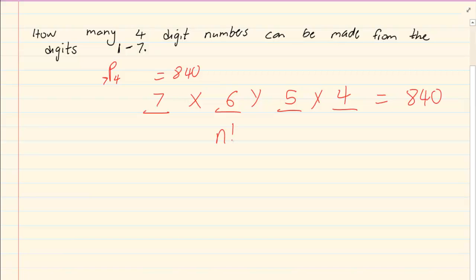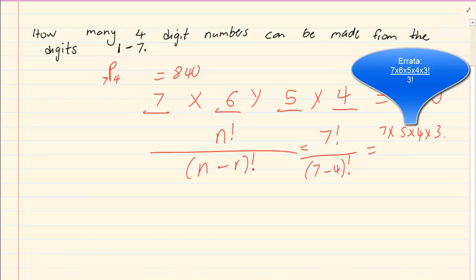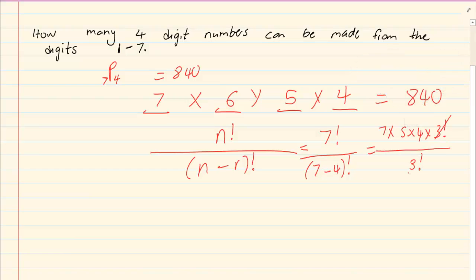And last you could use the formula which is equal to seven factorial over seven minus four factorial which is equal to seven times five times four times three factorial over seven minus four is three factorial. Again giving us the same answer.